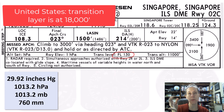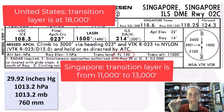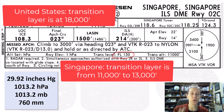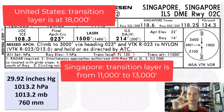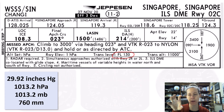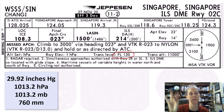But here in Singapore, that transition layer is between 11,000 and 13,000 feet. So there's a bit of a gap — a buffer — for aircraft that are in the flight levels versus not in the flight levels.